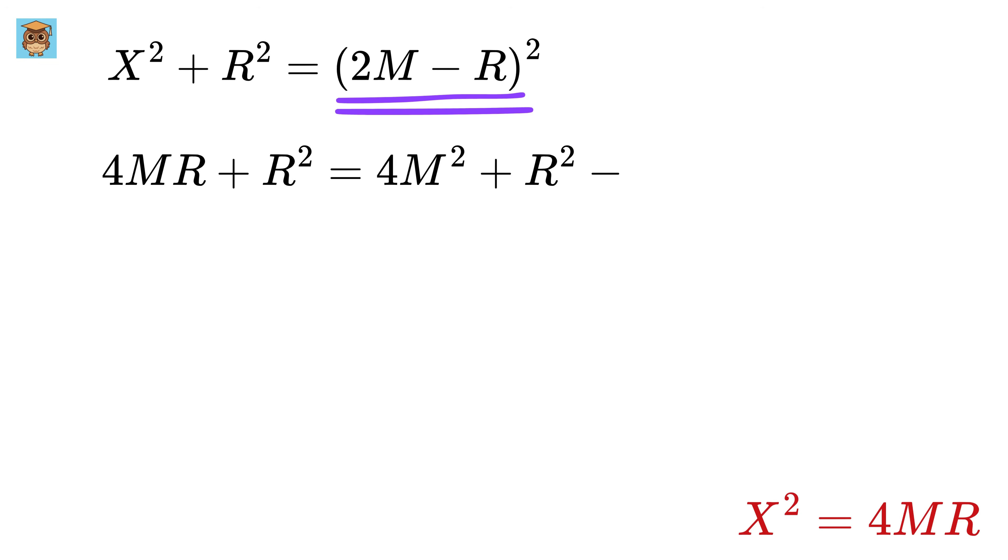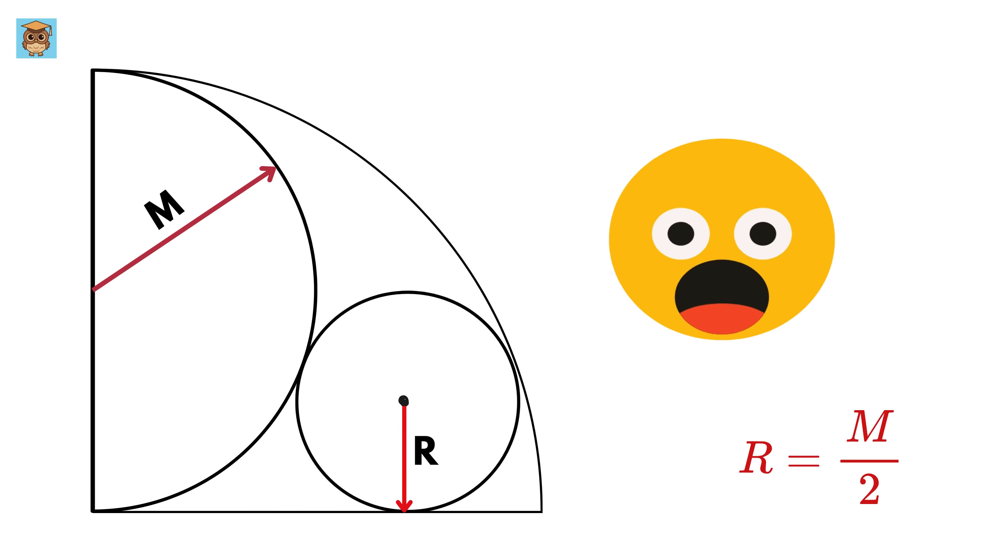Oh look, r² gets cancelled out and taking 4mr to this side we get 8mr = 4m². So finally we get r = m/2. And that's it, my mind is literally blown right now.